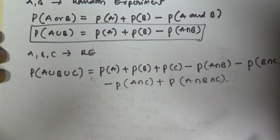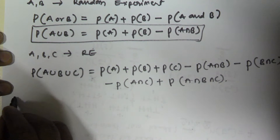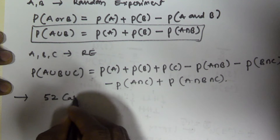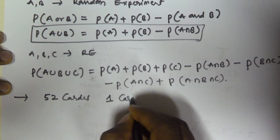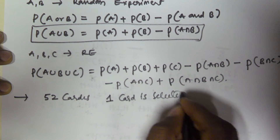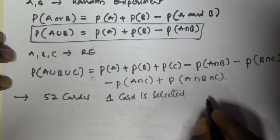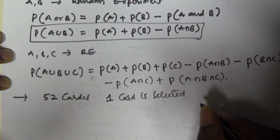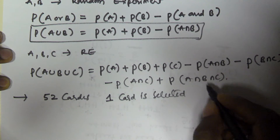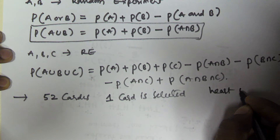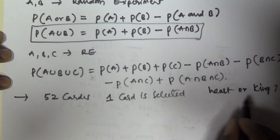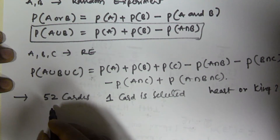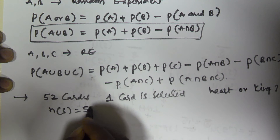We will see an example problem. Suppose there is a deck of 52 cards and randomly one card is selected. What is the probability that the card is a heart or a king? The total number of cards is 52, so the sample space n of S is going to be 52.